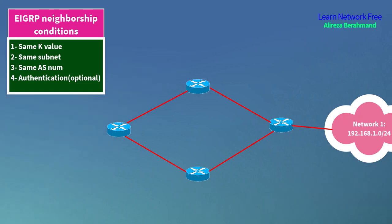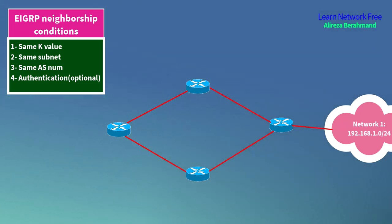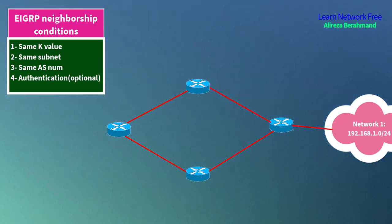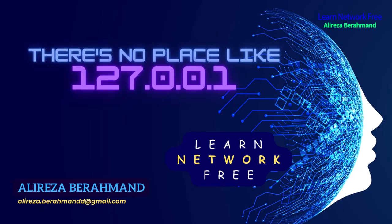Number four is authentication parameters, which you need to consider if you already have an encrypted EIGRP connection. I'm going to make a comprehensive video with a real-life scenario for EIGRP encryption in upcoming videos. Try to watch this video several times and take notes. Thank you for watching — I hope you enjoyed it, see you soon!